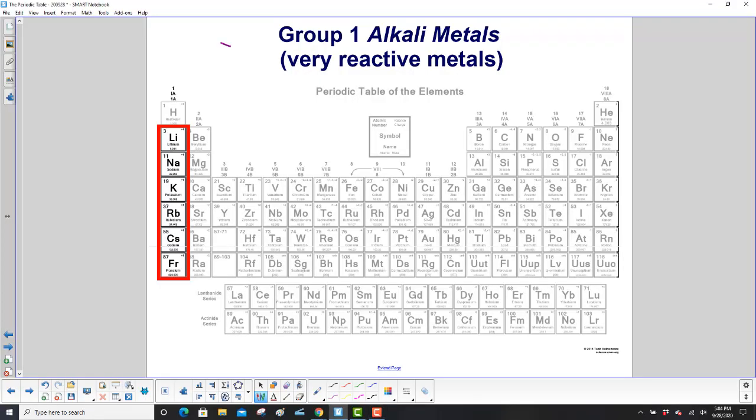Group 1, which is over here, are called the alkali metals. They are very reactive. And it starts with lithium over here, goes all the way down here to francium.